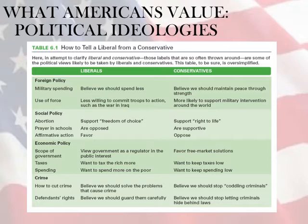How can you tell the difference between a liberal and a conservative? In Table 6.1, there is an attempt to clarify those labels that are so often thrown around, listing some of the political views likely to be taken by liberals and conservatives. This table is oversimplified, but it is the best visual that can be provided to help you understand what the differences are.